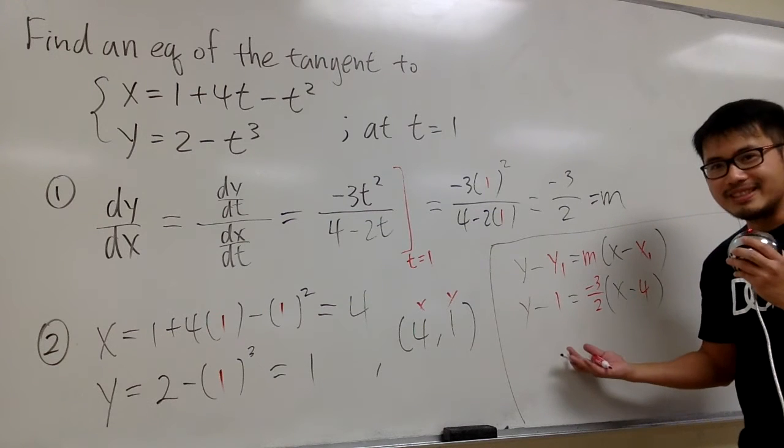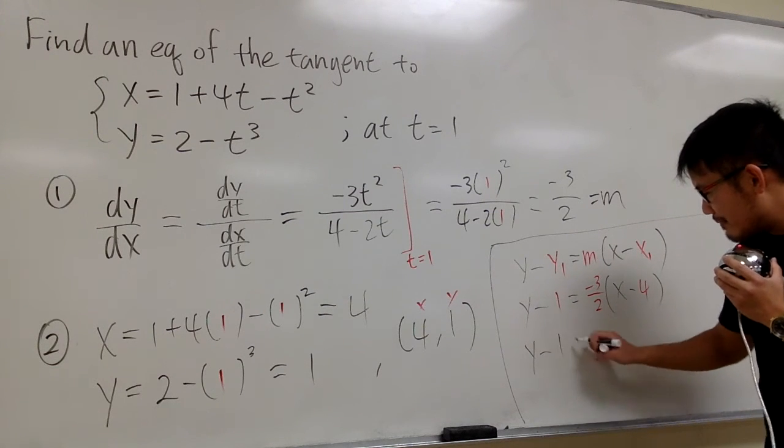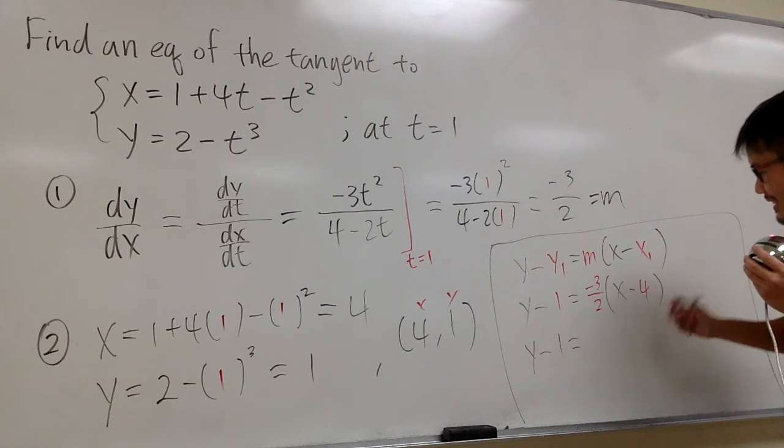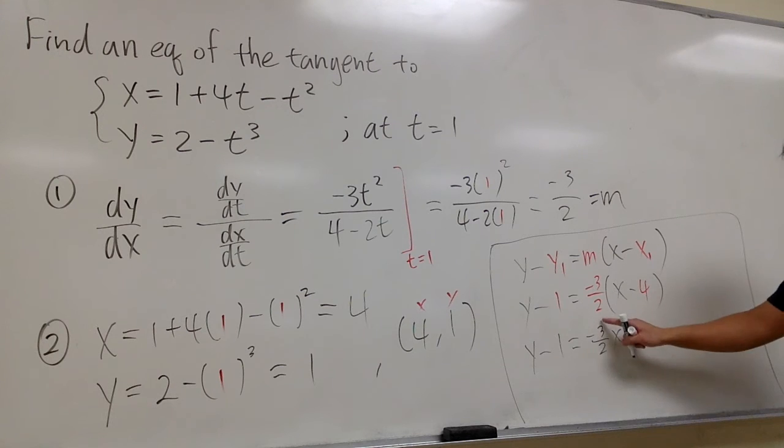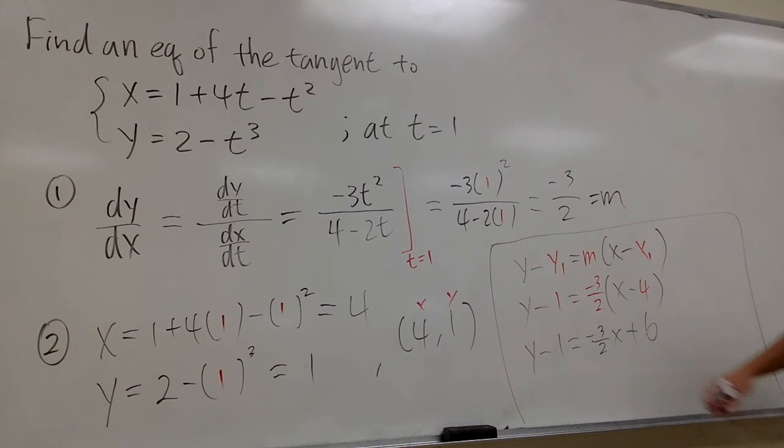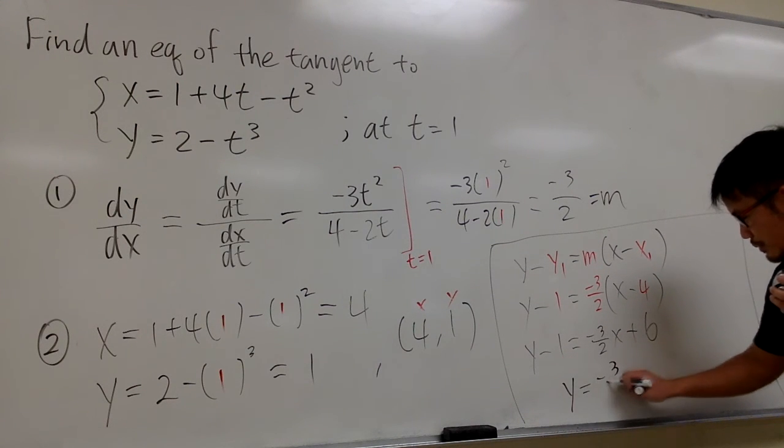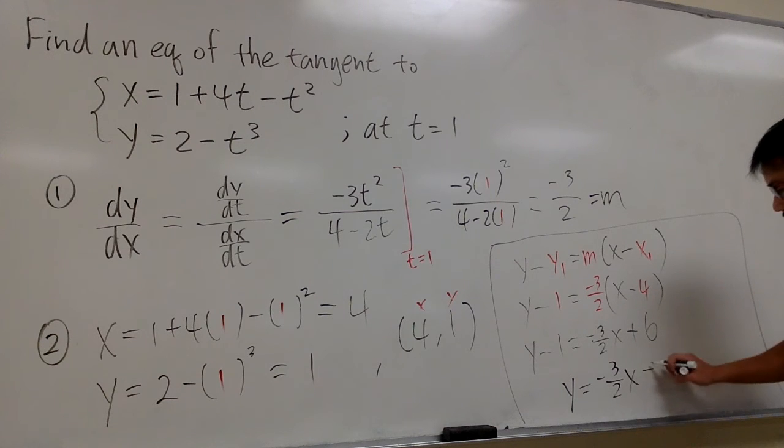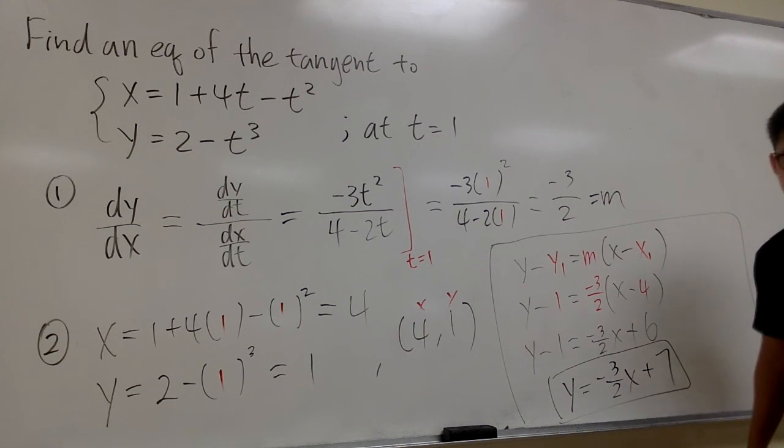Let's isolate the y. So y minus 1 equals, you distribute this, and this is negative 3 over 2x. Negative 3 over 2 times negative 4, we get plus, and then you can reduce, and this is plus 6. At the end, you add 1 on both sides. So y equals negative 3 over 2x plus 7, and this is the answer that we are looking for, and that's it.